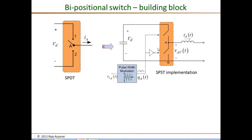The capacitor and inductor here are not part of the building block or the bi-positional switch. They are shown to emphasize the fact that the voltage across the two portions is usually a fairly constant DC voltage and the current through the pole is also a fairly constant DC current in the DC-DC converter example.